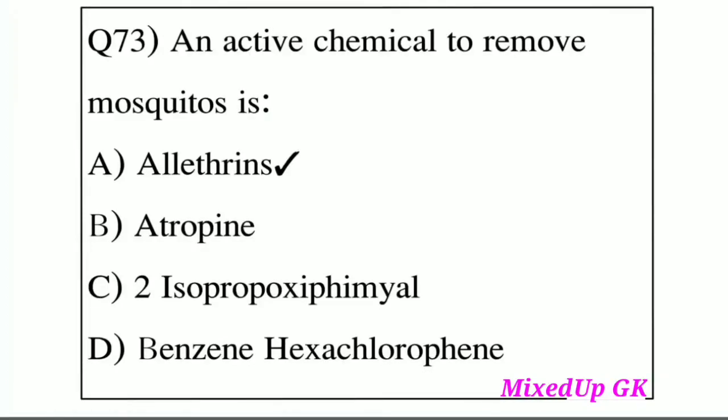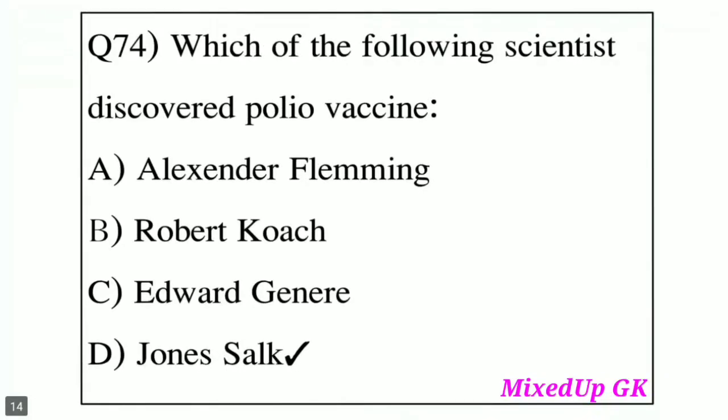Question number 73: What is the active chemical used to remove mosquitoes? Option A: Allethrin. Option B: Atropine. Option C: 2-Isopropofemile. Option D: Benzene Hexachloride. The answer is Option A, Allethrin.